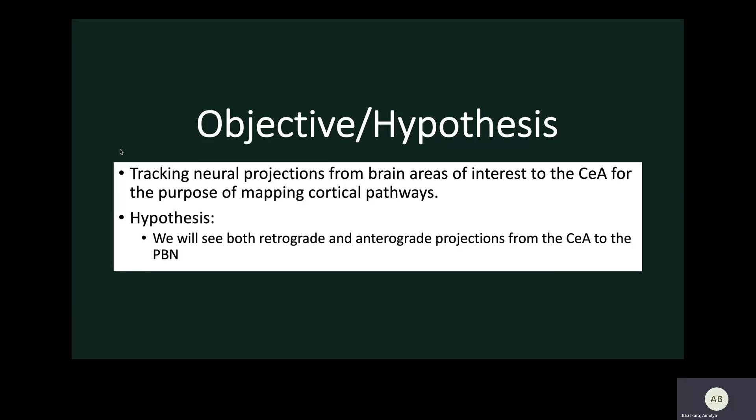Our objective is tracking the neural projections from these four areas of the brain to the CEA and back, for the purpose of mapping cortical pathways. Although we have carried out this experiment with all four areas, the area I'm going to be talking about specifically today is the PBN.